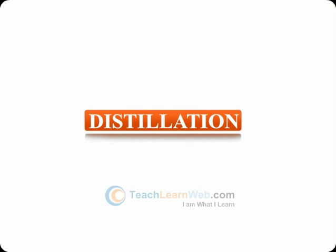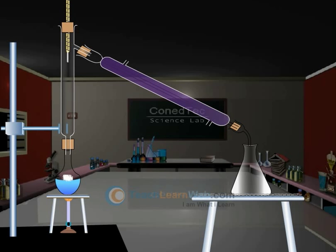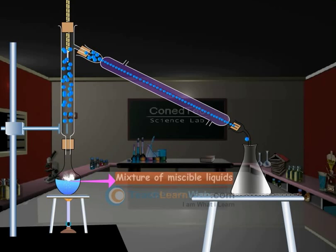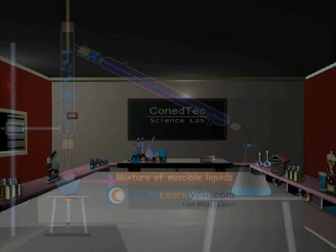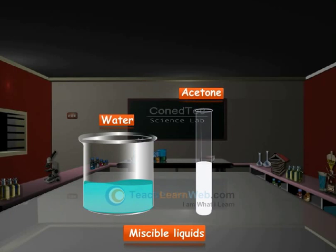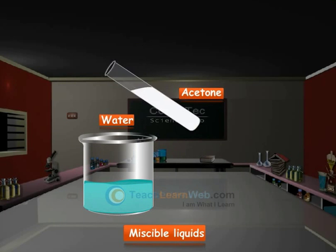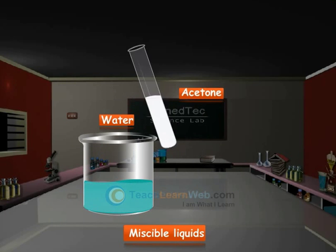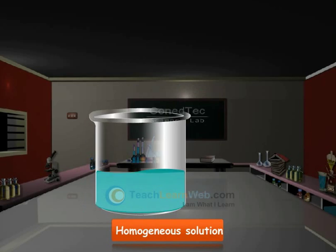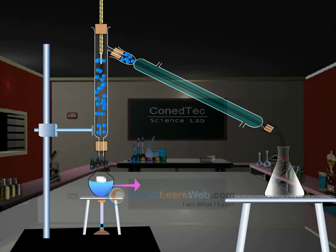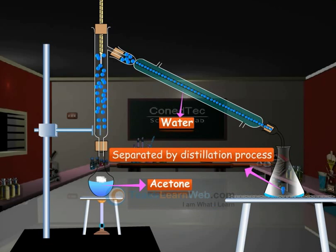Distillation. It is used to separate the components of a mixture which contains two miscible liquids. Miscible liquids are the ones which can mix in all proportions to form a homogeneous solution. Acetone and water can be separated by a distillation process.